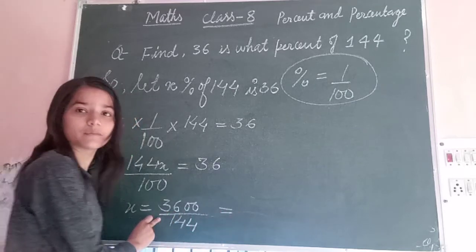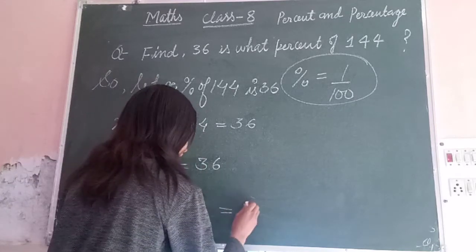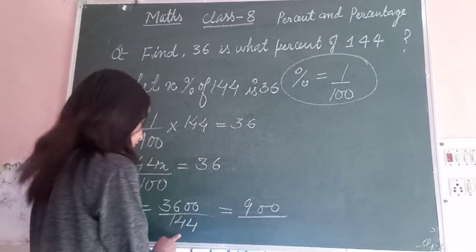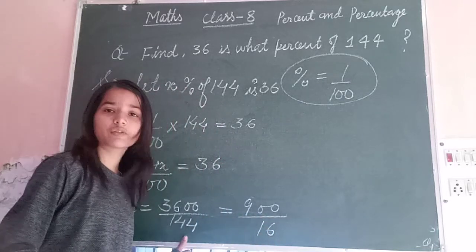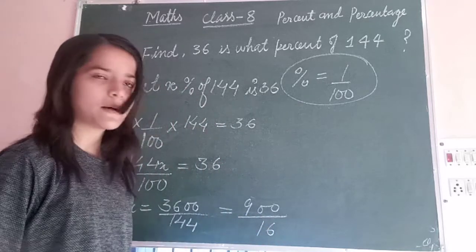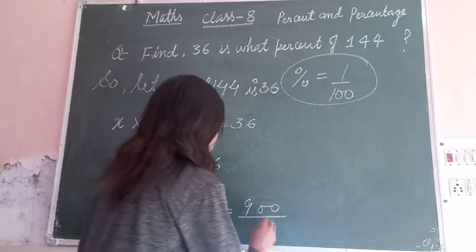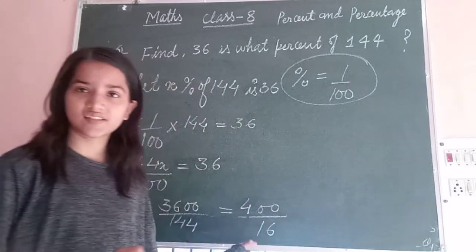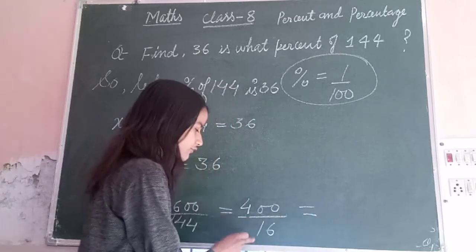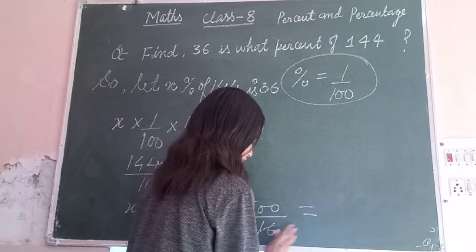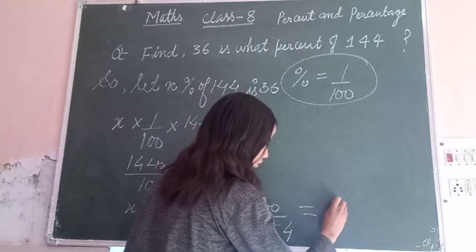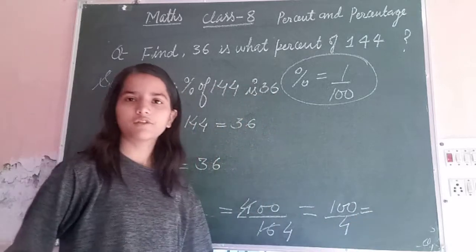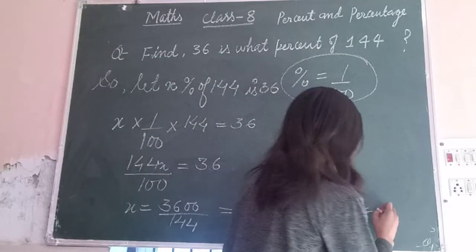We will cut this by 9. So 36 divided by 9 gives 4, and 144 divided by 9 gives 16. Then we further simplify: 4 divided by 4 gives 1, and 16 divided by 4 gives 4. So we get 100 upon 4, which after dividing gives us 25 percent.